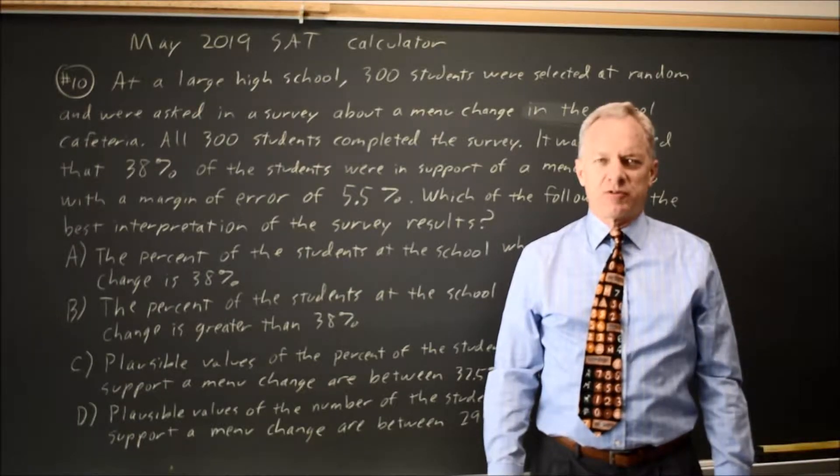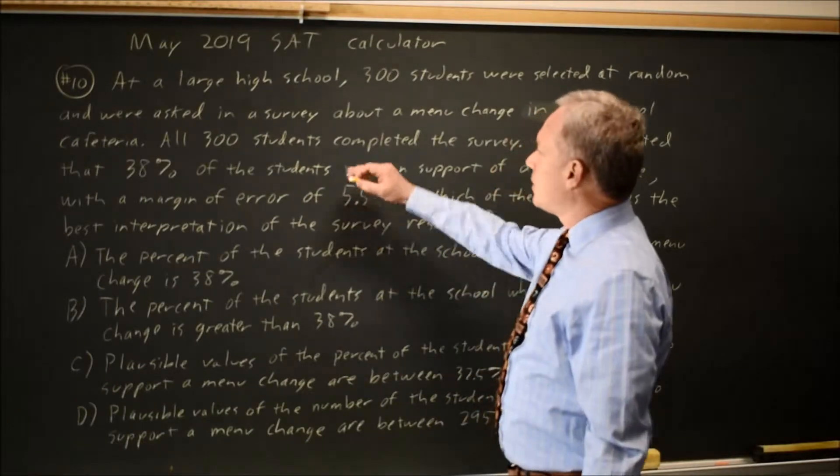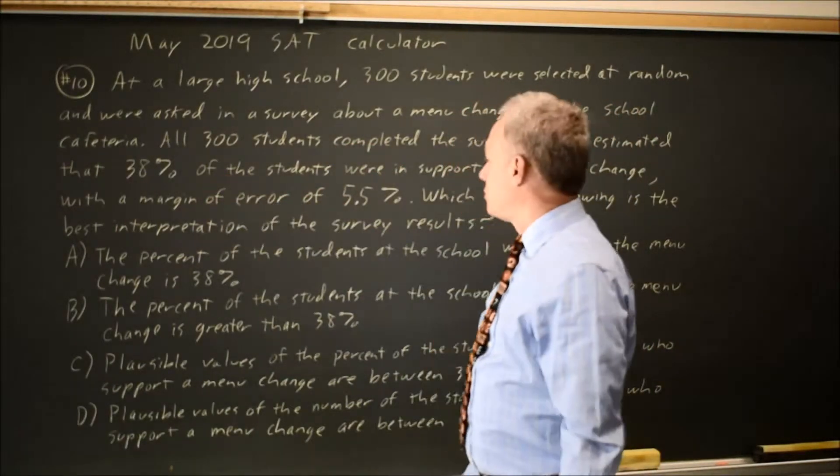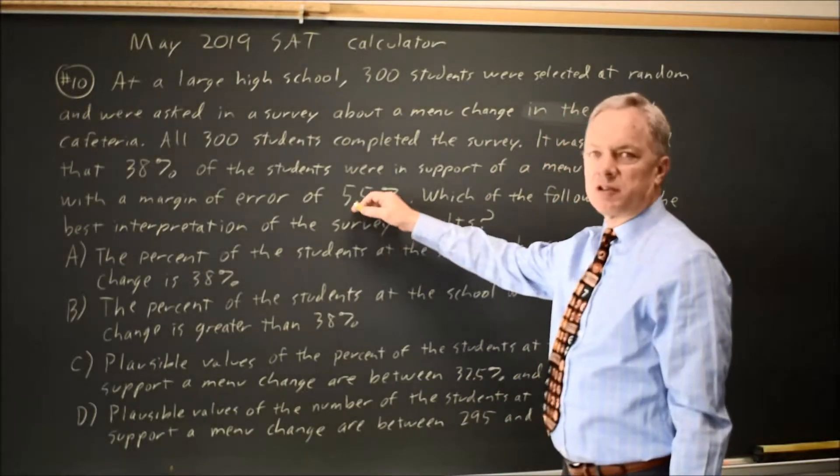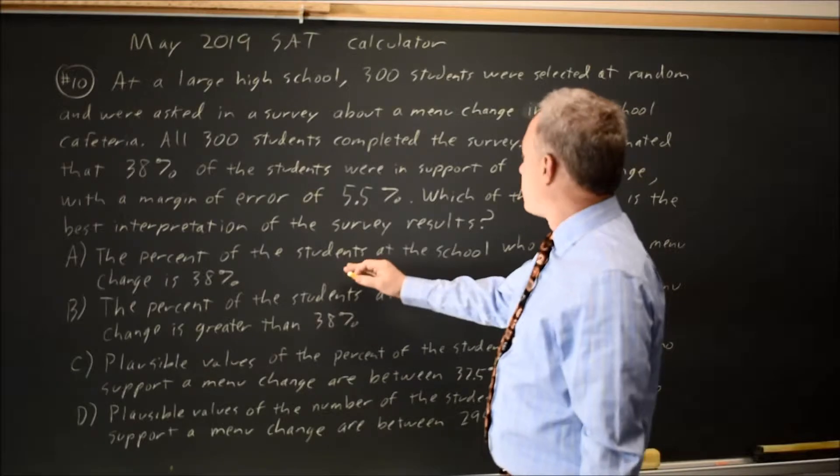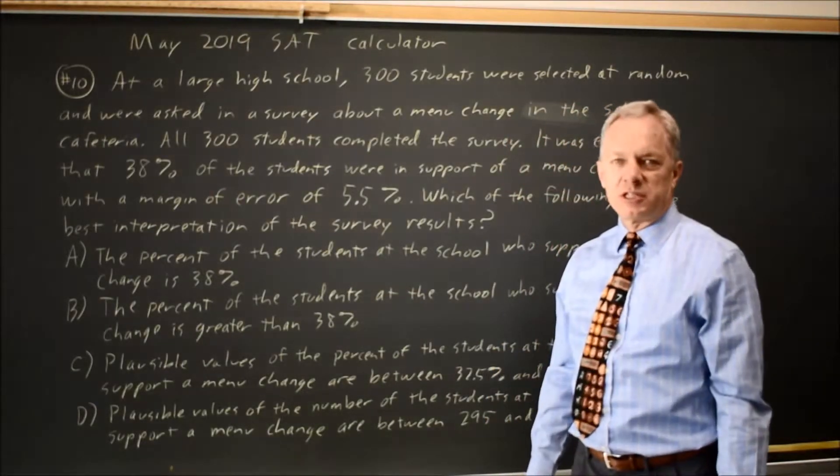This is Calculator Question Number 10 from the May 2019 SAT. College Board is asking about a survey with 300 students where 38% support a menu change and the margin of error is 5.5%. Choice A for the interpretation of the results is: the percent of students at the school who support the menu change is 38%.